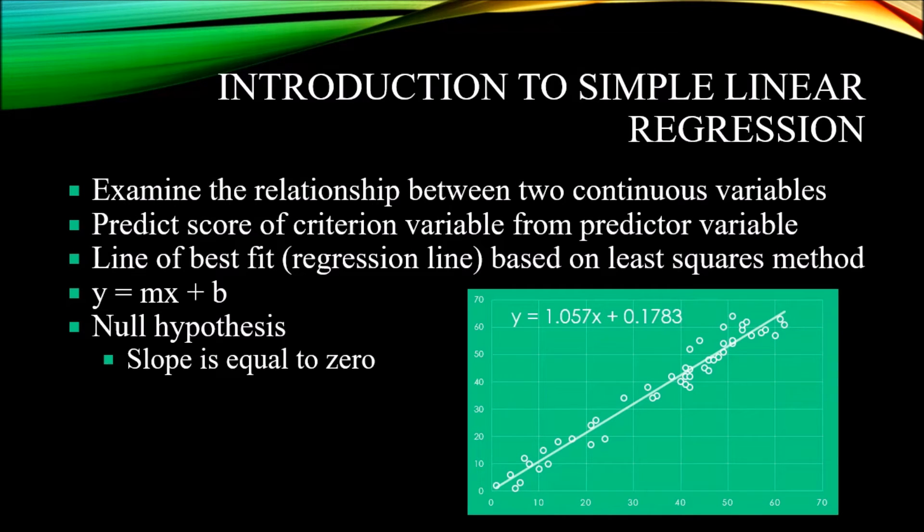If the value of m, the slope, is positive, we will have a line like we see in this graph here on the bottom right. A line that moves from the lower left to the upper right. If the slope is a negative value, if m has a negative value, the line would start in the upper left and move to the lower right. So with a positive slope, as the value of x increases, the predicted value of y increases. The negative slope, as x increases, the predicted value of y decreases.